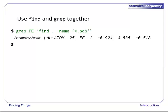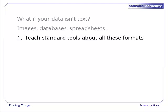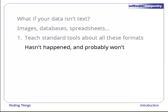So far, we have focused exclusively on finding things in text files. What if your data isn't text? What if we have images, databases, spreadsheets, or some other format? There are basically three options. The first is to extend tools like grep to handle those formats. This hasn't happened and probably won't because there are too many formats to support.